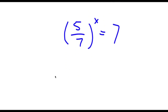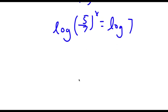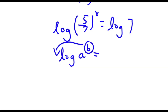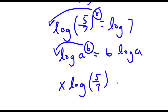Now I'm going to take the log on both sides, so I have log of 5 over 7 to the power of x is equal to log 7. Now if I have something in the form log a to the power of b, I can move this exponent b to the front of the logarithm, so this will equal b times log a. So I can move x to the front: x times log of 5 over 7, which is equal to log 7.